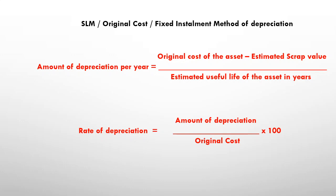Under this method, the amount of depreciation is found first, followed by the rate of depreciation. The formula to find the amount of depreciation per year is: original cost of the asset minus estimated scrap value, whole divided by estimated useful life of the asset in years. The rate of depreciation is amount of depreciation divided by original cost, multiplied by hundred.